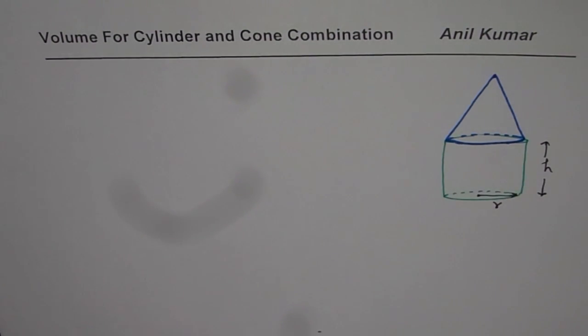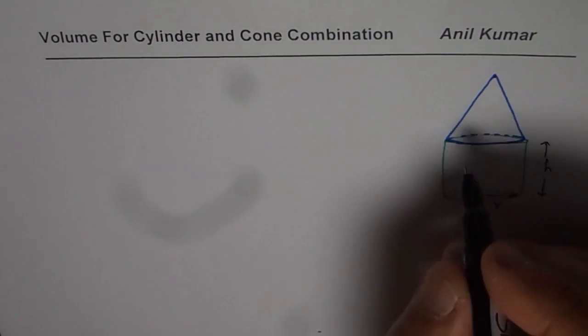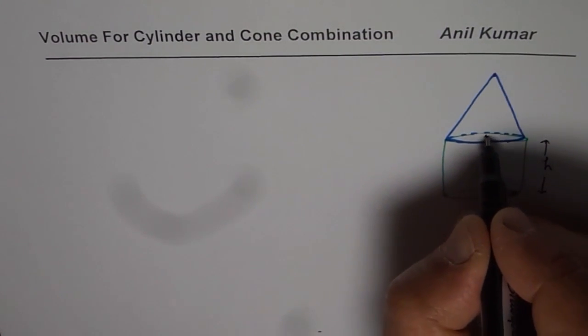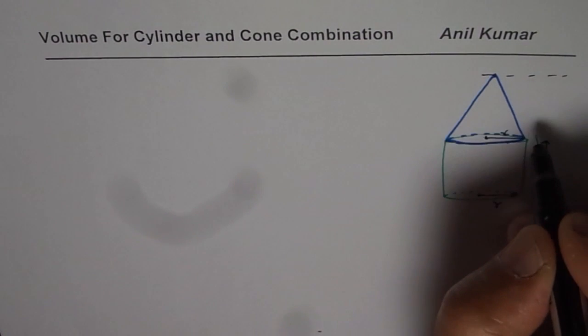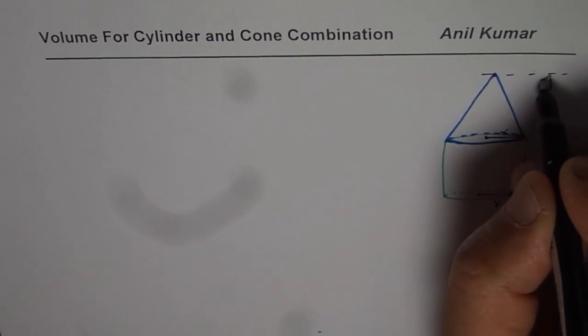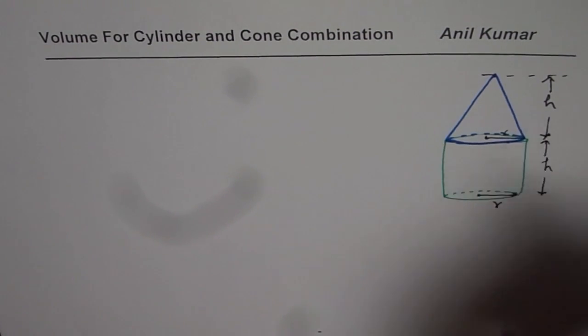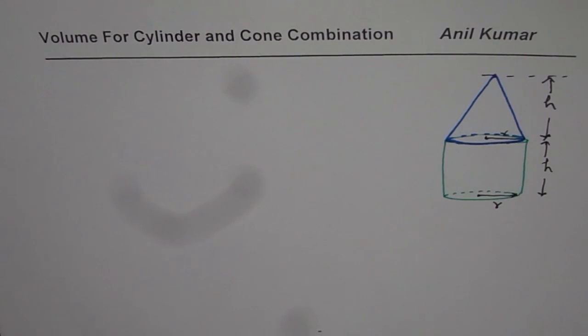As you can see, the cone will have exactly the same radius as the cylinder, so radius is same. And let us assume that the height is also same. It could be different, but in this particular case let me take height is exactly same. Now the question here is find the volume of this structure, find volume of this combination. How will you do it?